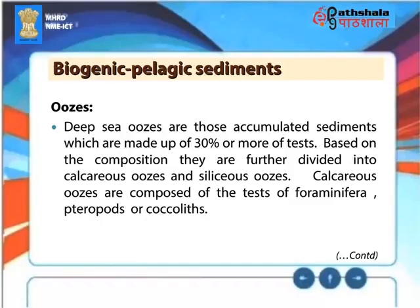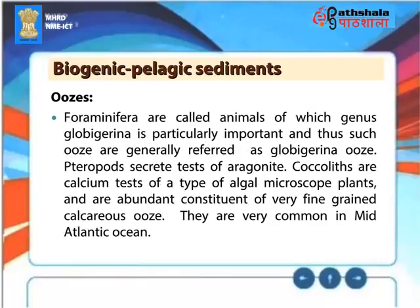Based on composition, oozes are further divided into calcareous oozes and siliceous oozes. Calcareous oozes are composed of the tests of foraminifera, pteropods, or coccoliths. Foraminifera are animals of which the genus Globigerina is particularly important, and thus such ooze is generally referred to as Globigerina ooze. Pteropods secrete tests of aragonite. Coccoliths are calcium tests of a type of algal microscopic plant and are abundant constituents of very fine-grained calcareous ooze. They are very common in the mid-Atlantic Ocean.